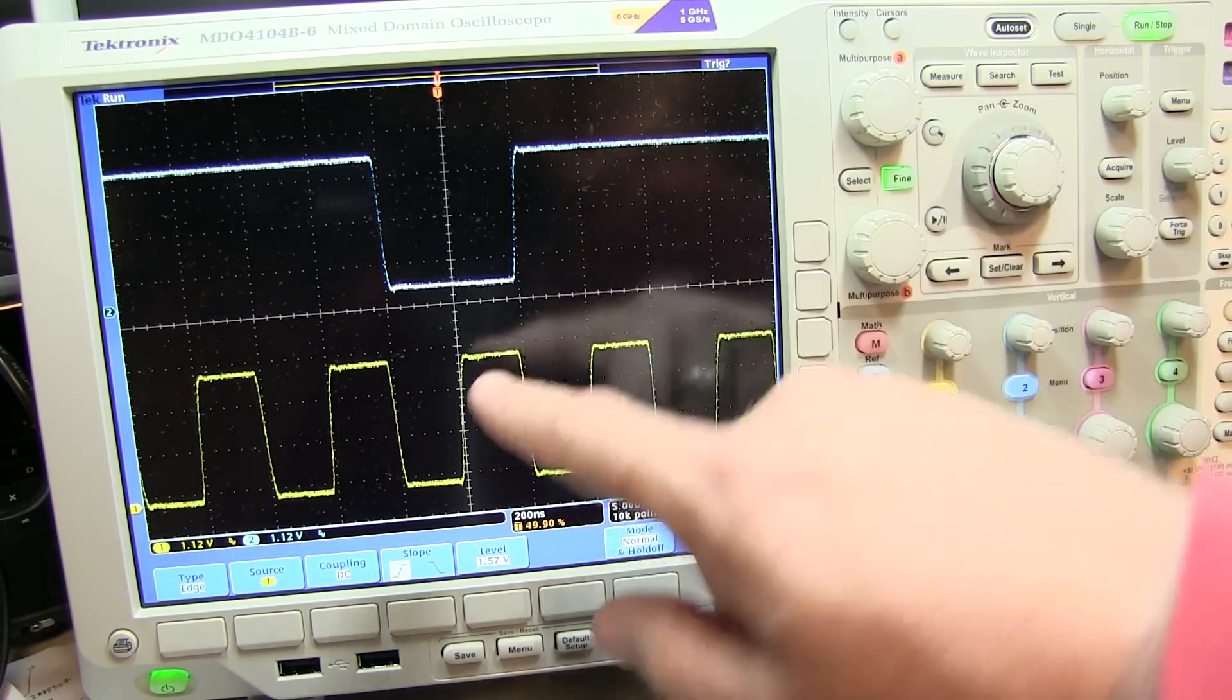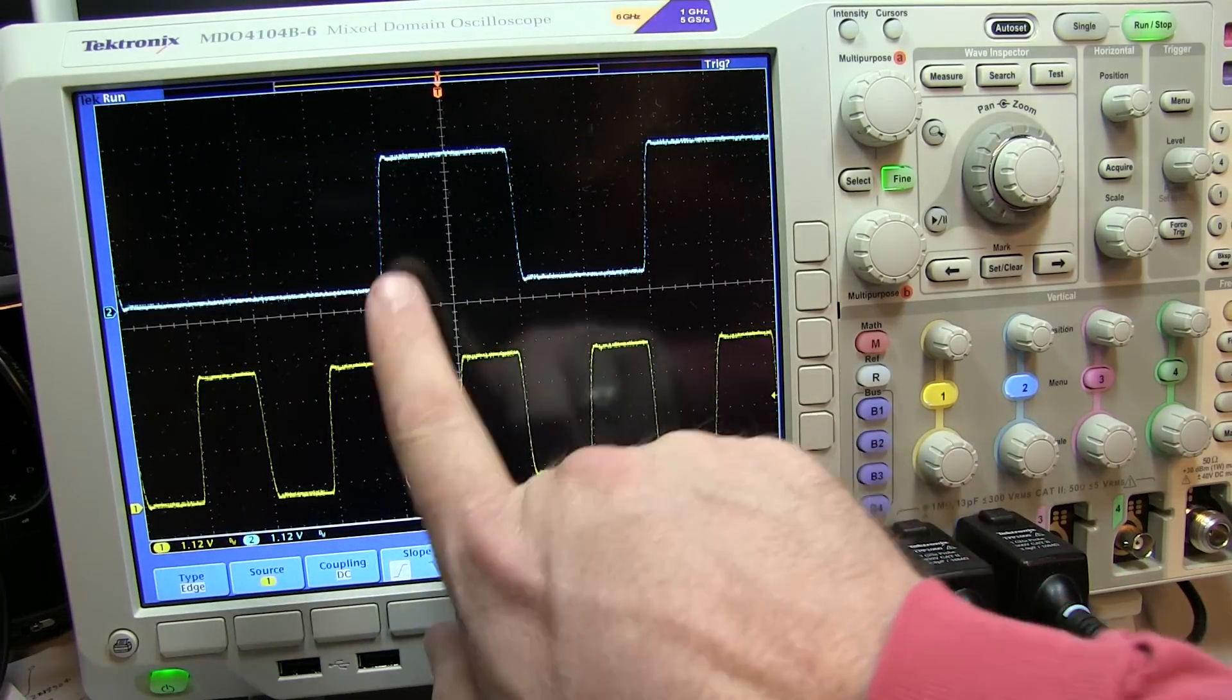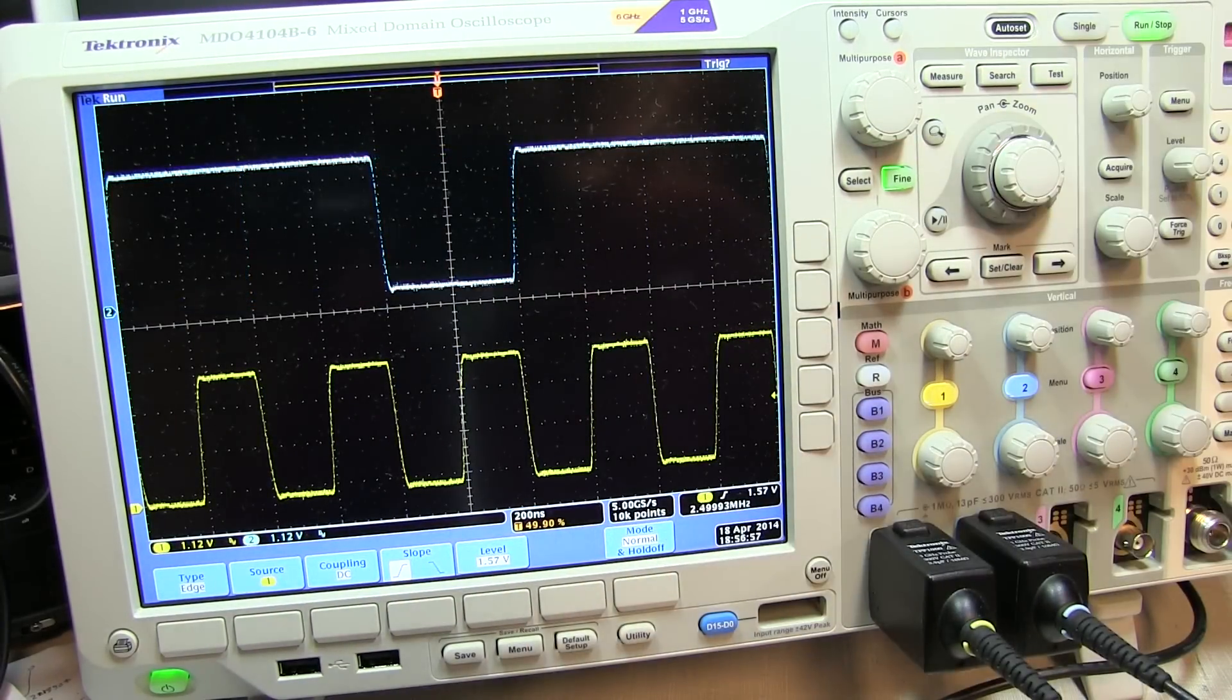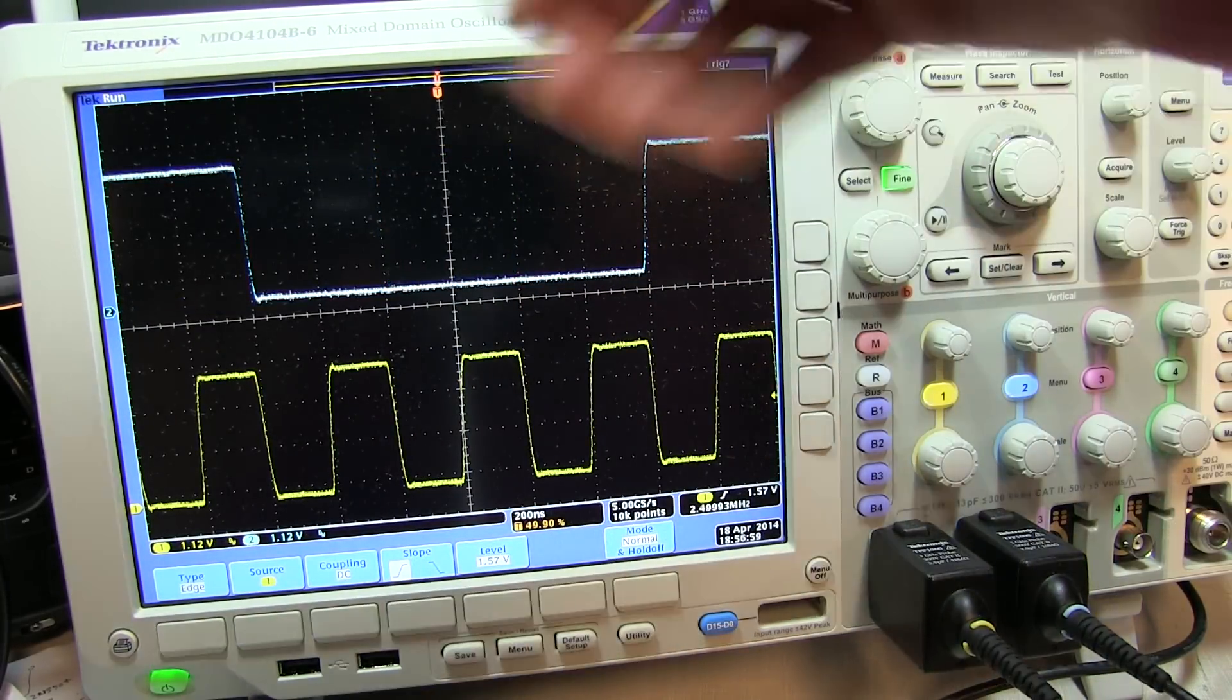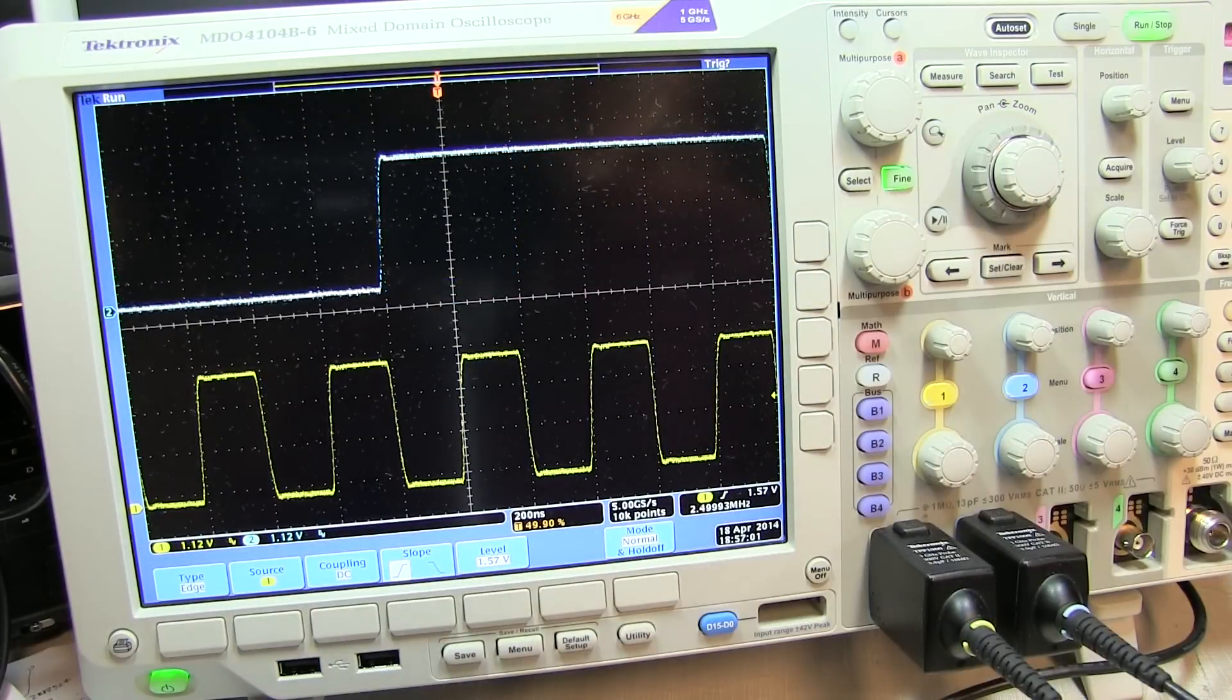There's a little bit of persistence turned on here, so you can see the waveform kind of fade away as the next one pops up here. But you can kind of get the idea now, each time I trigger, I'm going to grab different sequences within the bit pattern.